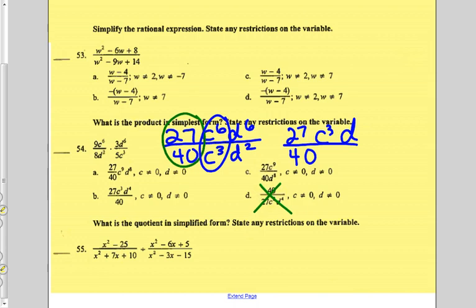and with d, you subtract the 6 minus 2 and get d to the 4th up top. So I'm thinking b looks like a good answer.